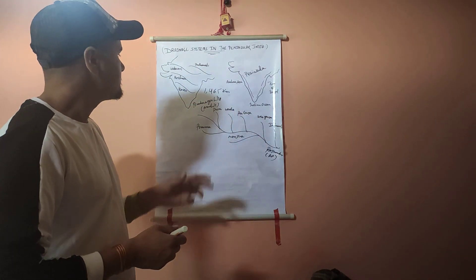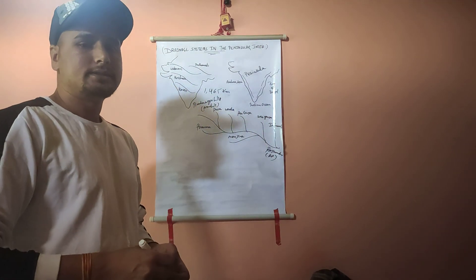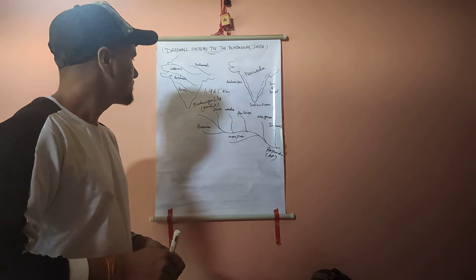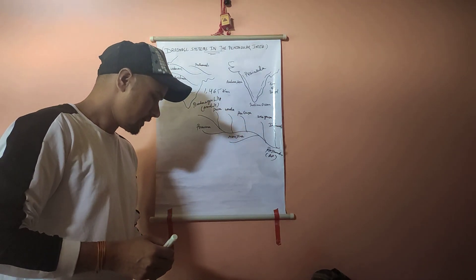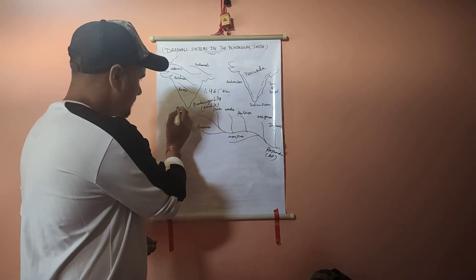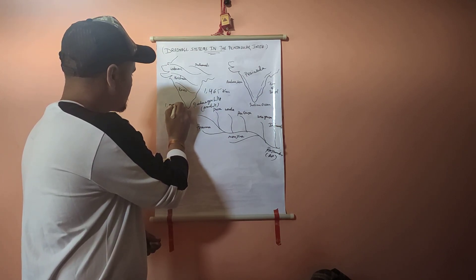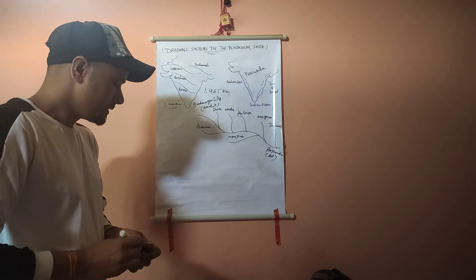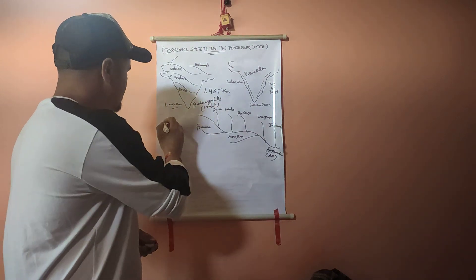The second major river is the Krishna River. It is the second largest peninsular river of India and its length is about 1000 km. The Krishna originates in the Mahabaleshwar Hills.